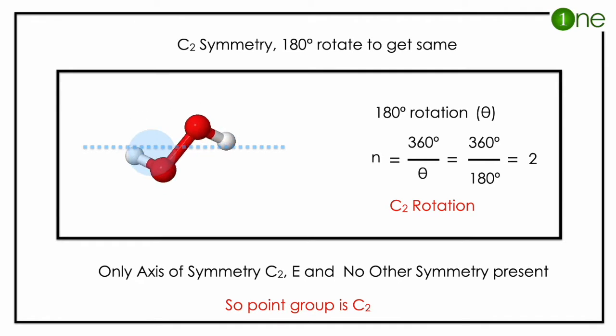The rotation n will be 360 divided by theta, which is 360 divided by 180, giving 2. So only C2 rotation. Only C2 and E means the point group of the molecule is C2. So the hydrogen peroxide book structure has C2 point group.